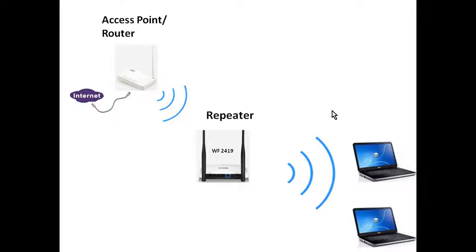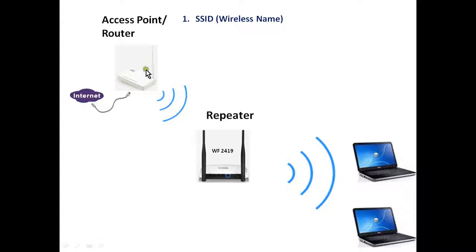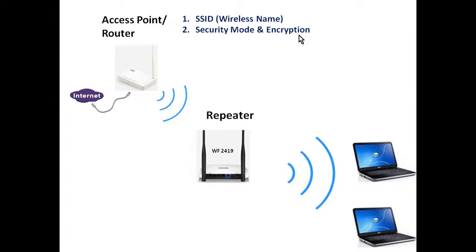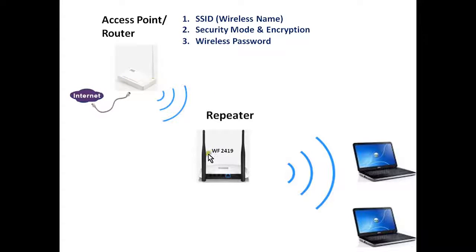To connect this repeater to the access point, we need some specific parameters. The first is the SSID — the wireless name of the access point. The second is the security mode and encryption method. The third is the wireless password. We need to know the SSID, security mode, and wireless password of the existing access point or router.